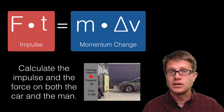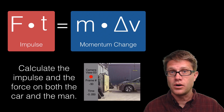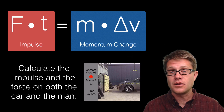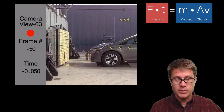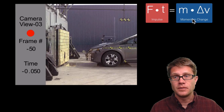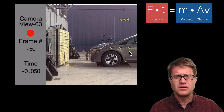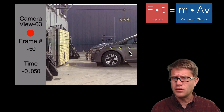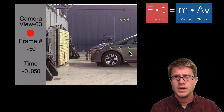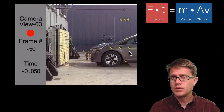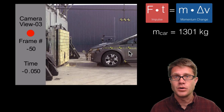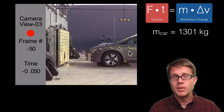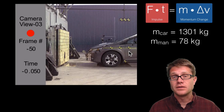For example, could you calculate the impulse and the force on a car as it crashes into a wall, and then on the crash test dummy inside? You will be able to. The equations we need are mass times change in velocity, and force times time. The mass of this 2013 Honda Civic Hybrid is 1301 kilograms, and the mass of the person inside is around 78 kilograms.